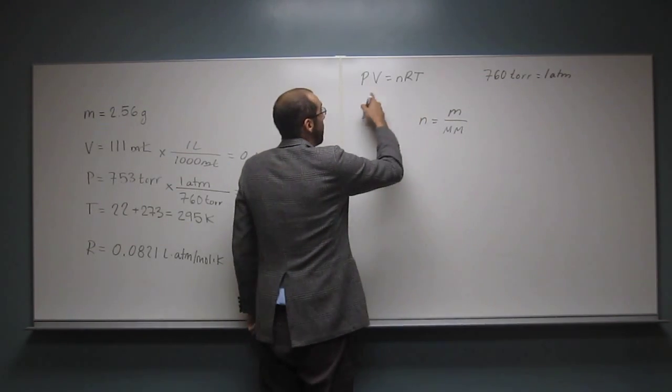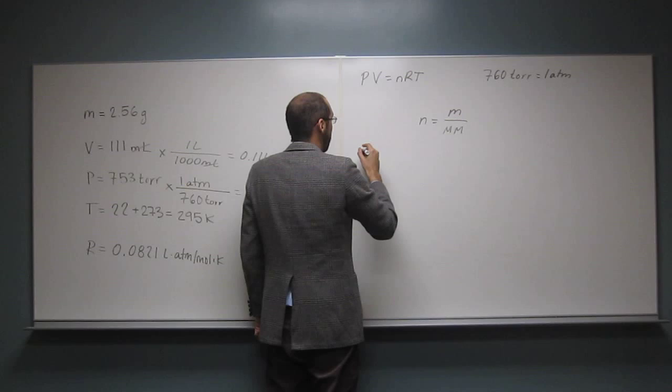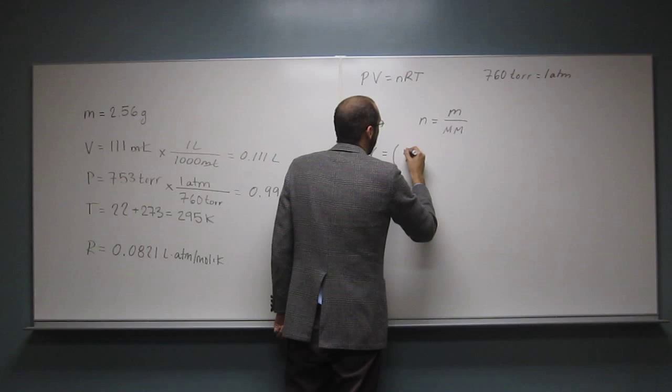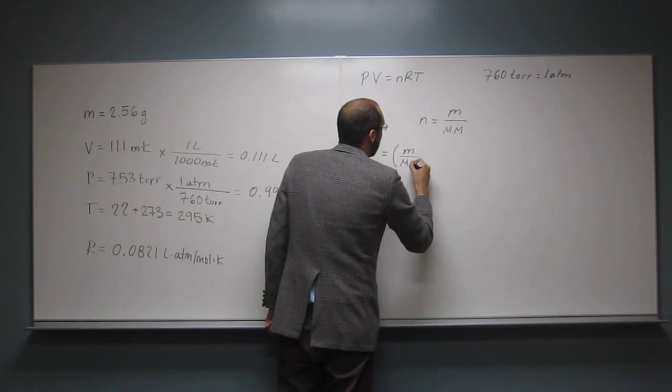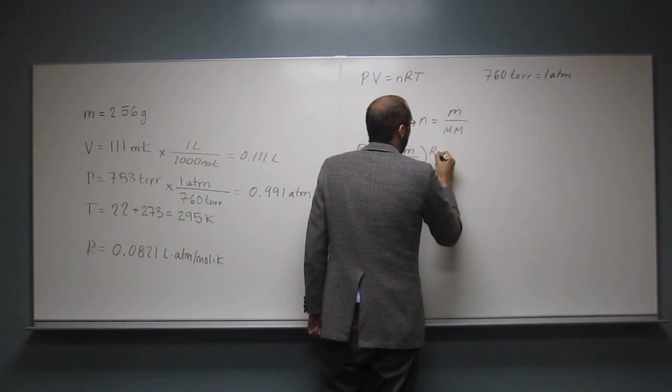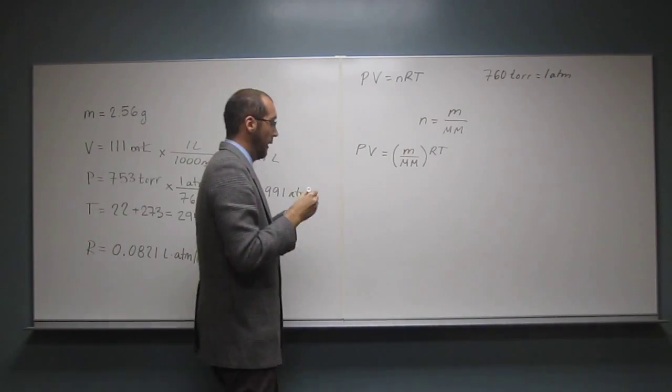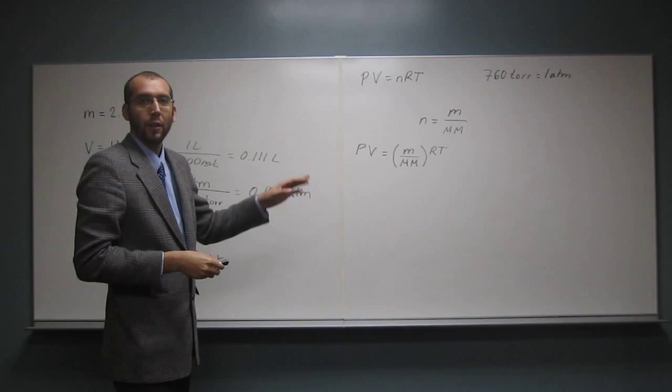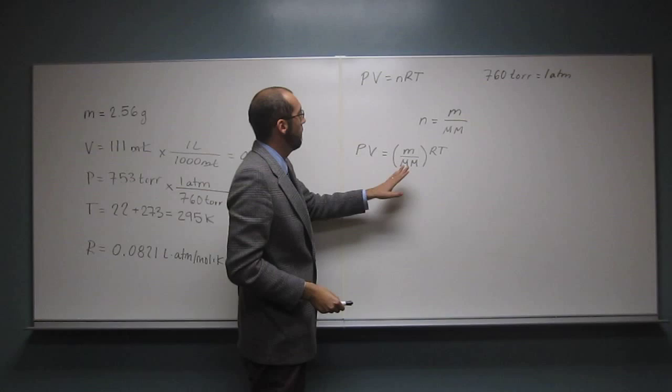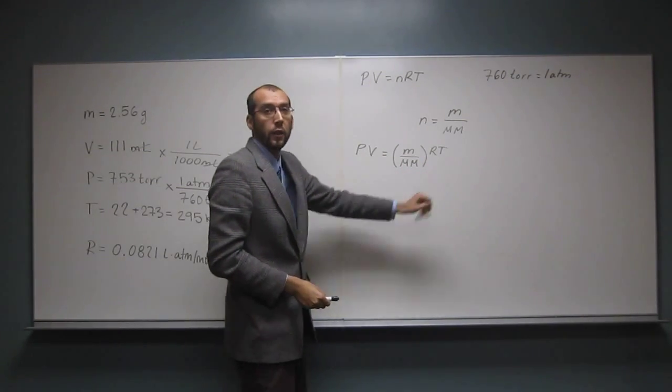So when we have this equivalency, we could just take this and put it into, like substituted for that n there. So now let's write that equation substituting that for n. So we've got PV equals, instead of n, we've got mass divided by molar mass, like that, times RT.